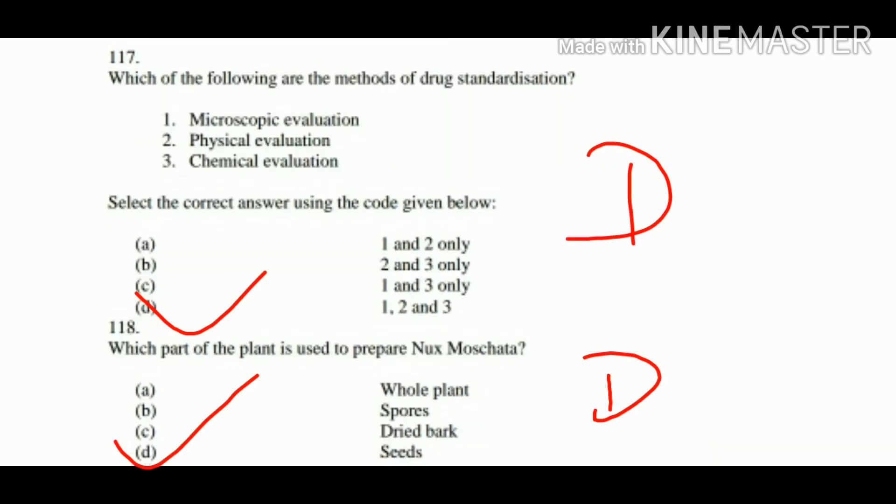Question number 117: Which of the following are methods of drug standardization? Options: microscopic evaluation, physical evaluation, chemical evaluation. All three are methods of drug standardization, so Option D — 1, 2, 3 all correct — is right.